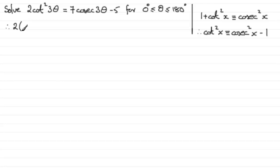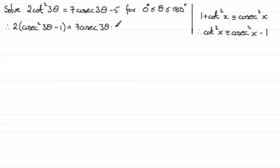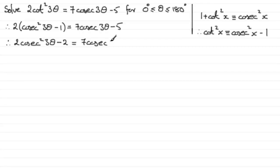Making that substitution, the first term becomes 2(cosec²(3θ) - 1), and that equals 7cosec(3θ) - 5. Expanding the bracket gives 2cosec²(3θ) - 2. I'm going to bring all terms to one side on the next line, since we have a quadratic equation in cosec(3θ) that needs to be set equal to zero.